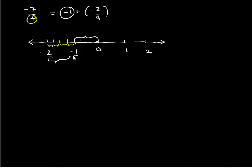Now, take 3 out of these 4 parts because the numerator is 3. Let us represent this, from minus 1, we have to take 3 out of these 4 parts. So, we have 1, 2 and 3.